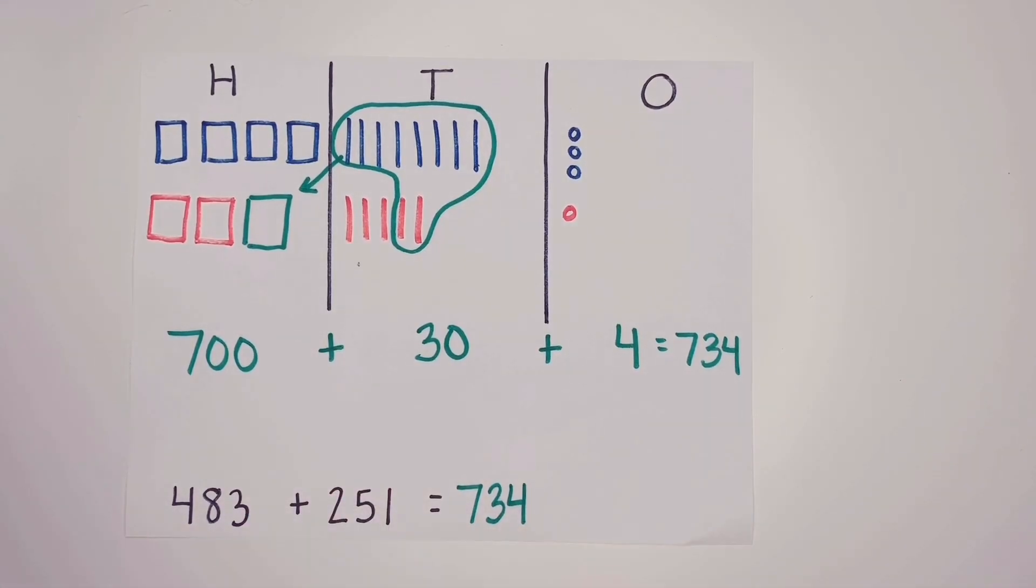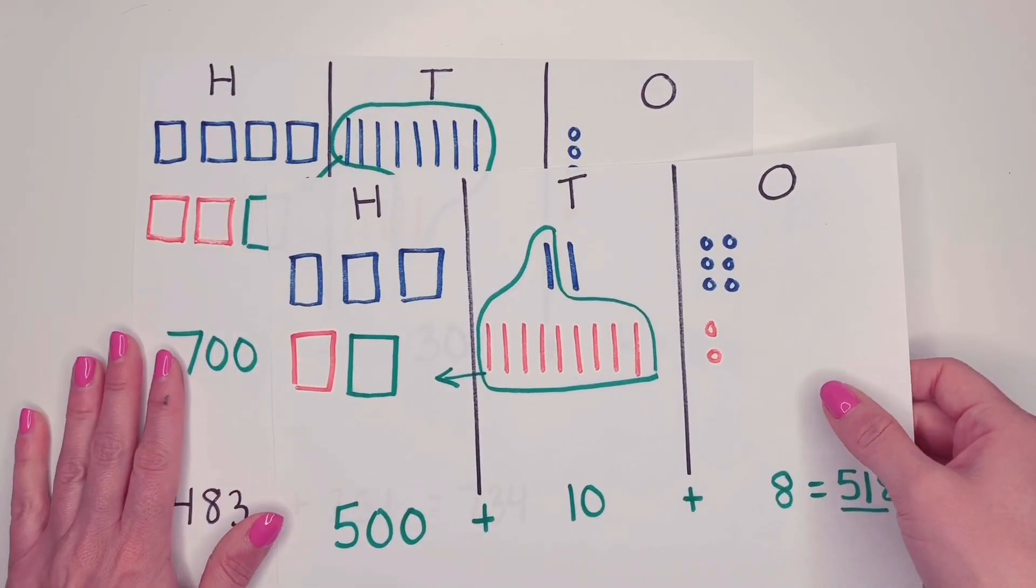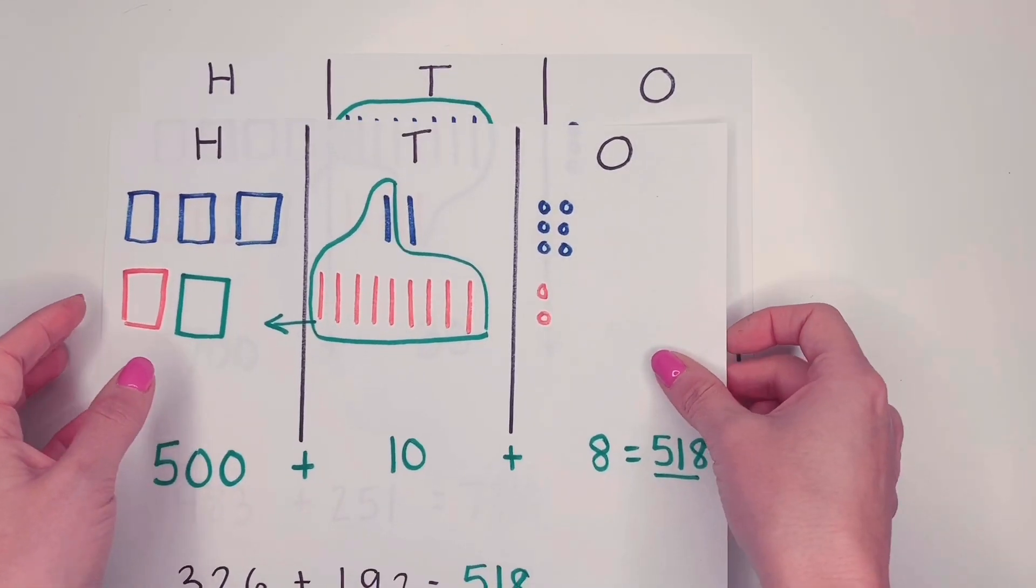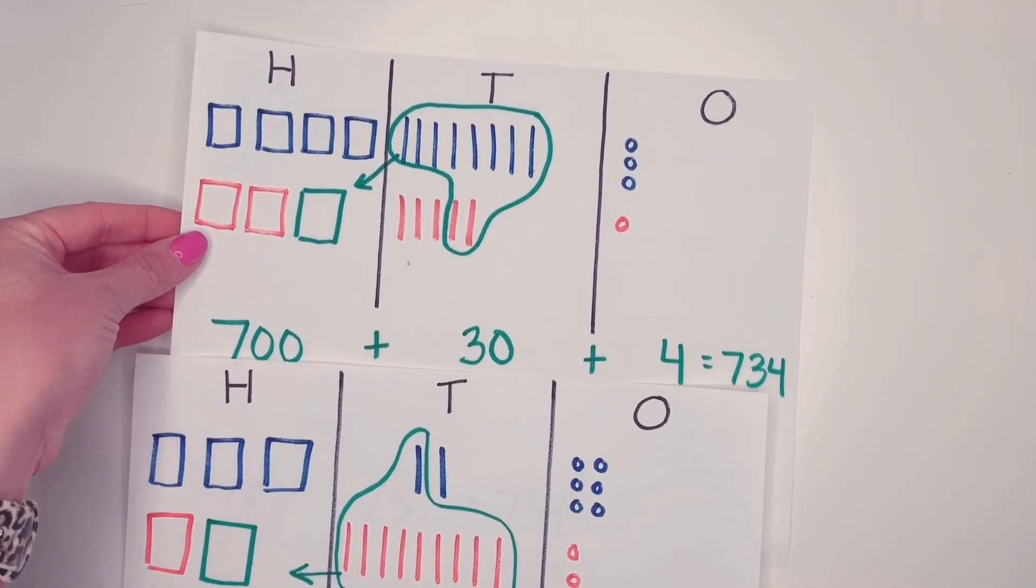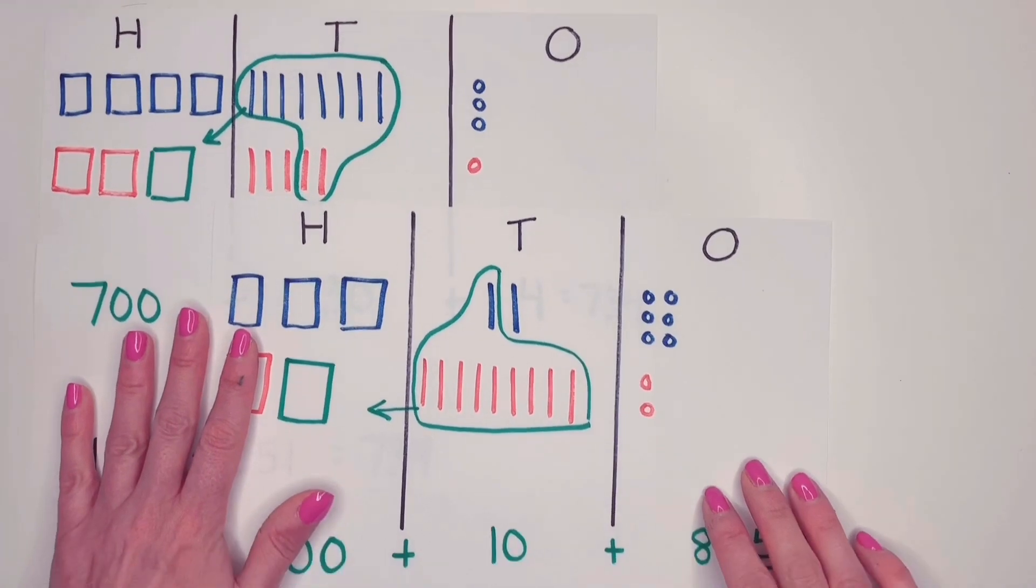So now that we've practiced the HTO chart, I'm going to have you practice in Seesaw. And then tomorrow we will be doing adding with three digits with the standard algorithm. It's important to know different strategies for adding. So we're going to do the HTO charts today and then move along to different strategies for the rest of the week.